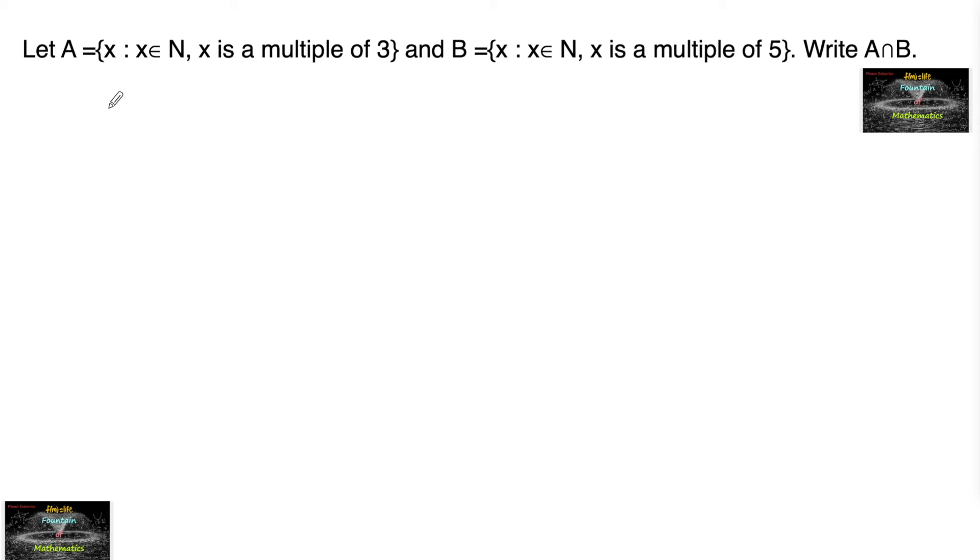Given let A is equal to x such that x is a natural number and x is a multiple of 3. And set B is given x such that x is a natural number, x is a multiple of 5.